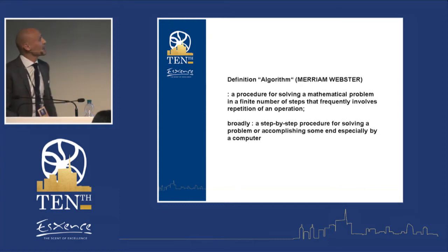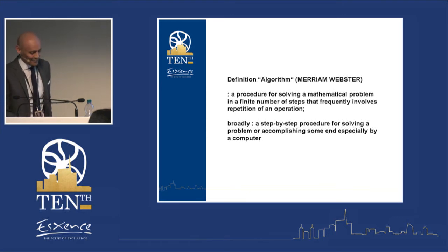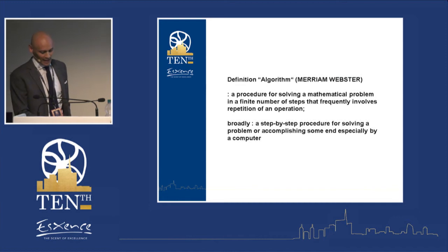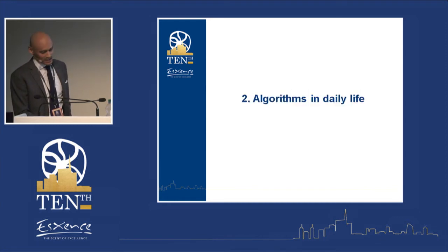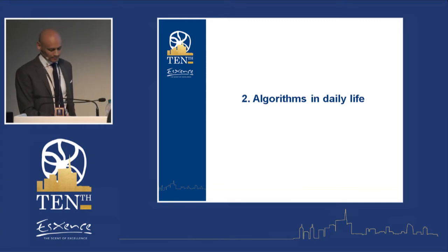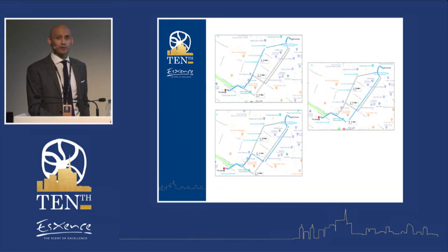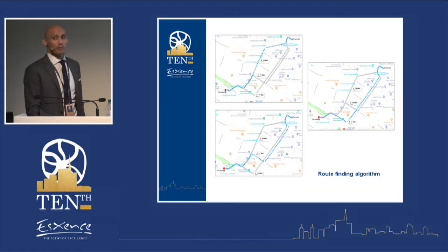I would like to give you some examples of algorithms in real life. This is a small, random selection — a fraction of examples that indicate the spectrum of where we find algorithms in our daily life, merely for illustration. We find algorithms in navigation systems like Google Maps, where a route-finding algorithm will lead you from A — in this case Milano Centrale — to B, the mall at Piazzalina Bobardi.